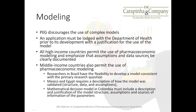All high-income countries permit the use of pharmacoeconomic modeling and emphasize that assumptions and data resources be clearly documented — there is no form of a pre-approval process. They encourage that an economic model should be appropriate to the research question, not necessarily favoring simple or complex, but appropriate to answer it. Middle-income countries also permit the use of pharmacoeconomic modeling. In all middle-income and high-income countries, they are interested in the transparency of the model, but don't include any form of pre-approval before further work can be done on the pharmacoeconomic submission.